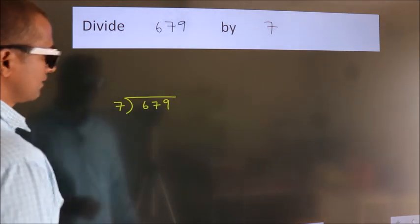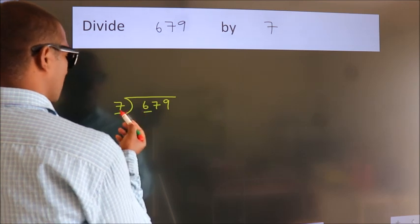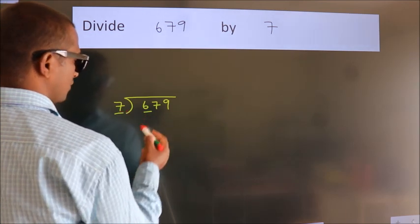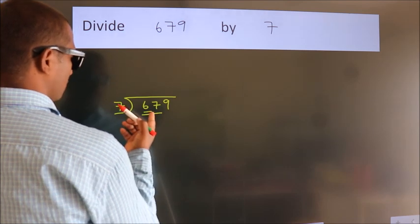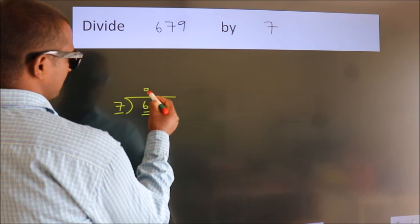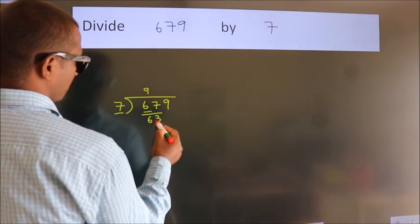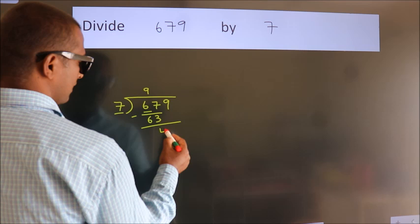Next. Here we have 6, here 7. 6 smaller than 7. So, we should take 2 numbers. 67. A number close to 67 in the 7 table is 7 nines, 63. Now, we should subtract. We get 4.